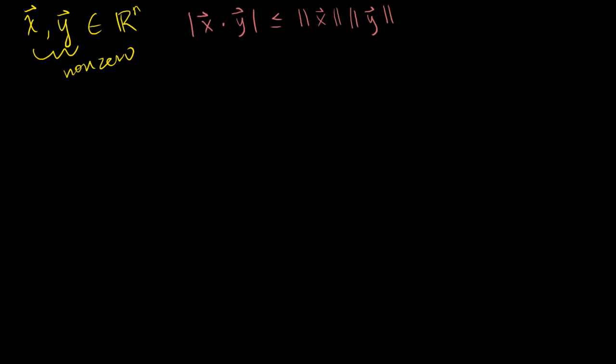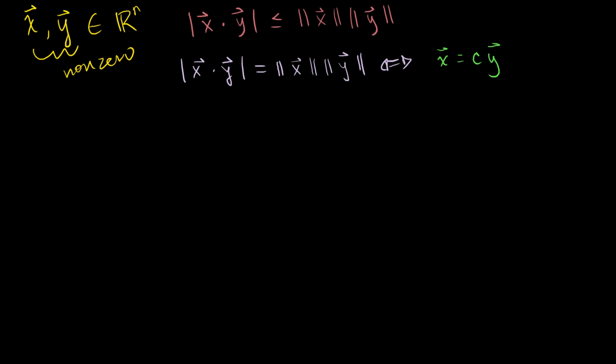The equal sign applies only in the situation where one of these vectors is a scalar multiple of the other — or they're collinear. One is just a longer or shorter version of the other. So only where x is equal to some scalar multiple of y. This inequality is called the Cauchy-Schwarz inequality.